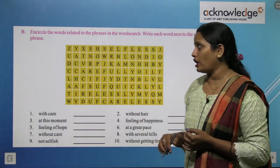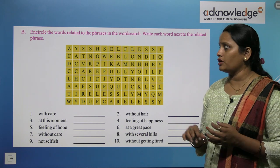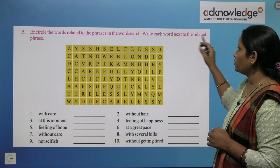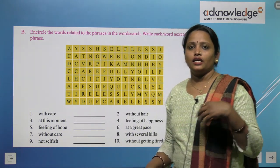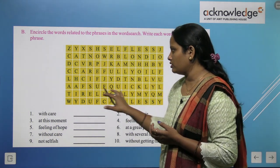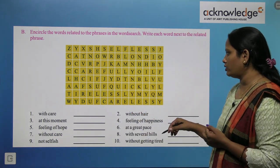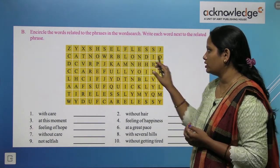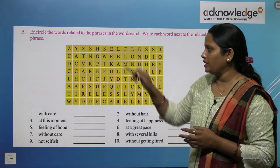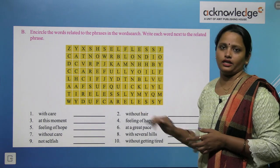Next, encircle the words related to the phrase in the word search, and write each word next to the related phrase. For example, 'with hair' means having hair fully, and the opposite — 'without hair' — means bald, spelled B-A-L-D. We have done two examples; you have to find the rest, encircle them in the word search, and write them next to the phrase.